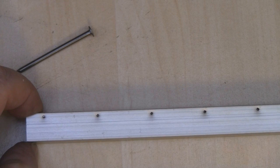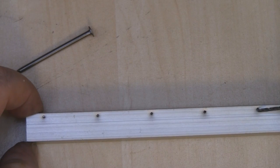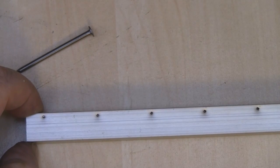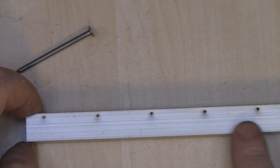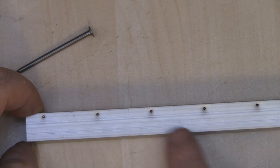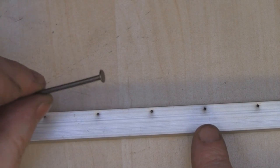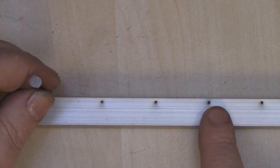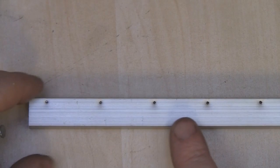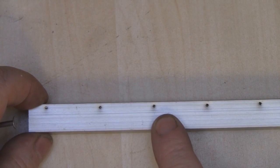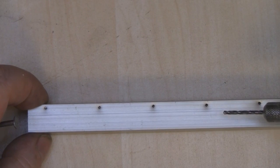To help guide my drill into position where I want it on that mark, I've made a little punch hole in each one of those marks. If you haven't got a hole punch, just get a nail and hammer and lightly tap it, just enough to put a little indentation to guide your drill.